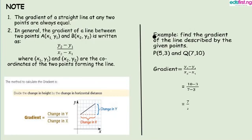So let's look at the methods for calculating gradient. We have divided change in height by the change in horizontal distance. That is what we have explained earlier. So we have gradient, we have change in y over change in x. You can see from this small graph here. And then we look at a very typical example. Let's say find the gradient of the line described by the given point. Point P, we have x1 there and y1. Point Q, we have x2 and y2. So at the end of the day, we put the formula and then we substitute to get 7 over 2.